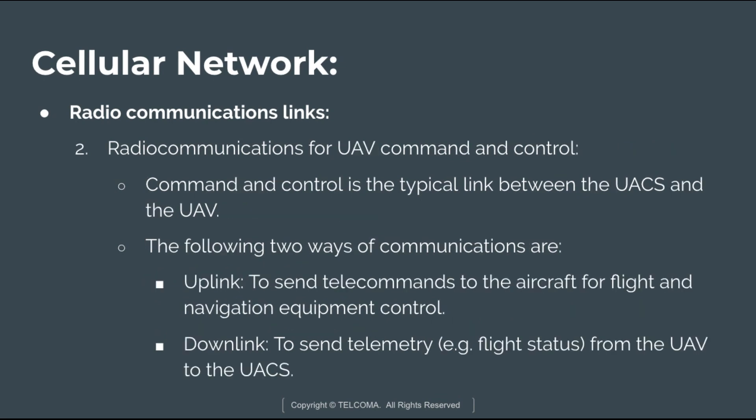The second type is radio communication for UAV command and control. The command and control link is the typical link between UACs and the UAV. Two-way communications are used: uplink and downlink. In uplink, telecommands are sent to the aircraft for flight and navigation equipment control. In downlink, telemetry — for example, flight status — is sent from the UAV to the UACs.